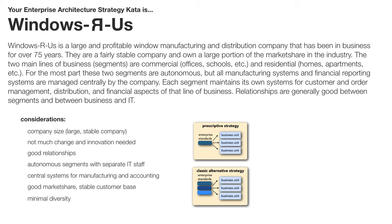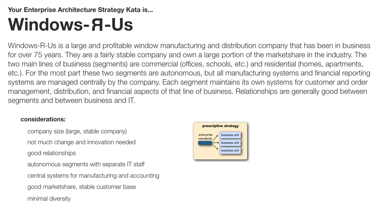So now we've got a choice of a centralized approach: should it be prescriptive or classic alternatives? Each segment might have its own, and either of these would actually work. However, my choice would be prescriptive. Either of these two would work, but the prescriptive strategy here really provides that minimal diversity and really cuts costs — allowing for reusable assets across these business units who are both selling and making windows.